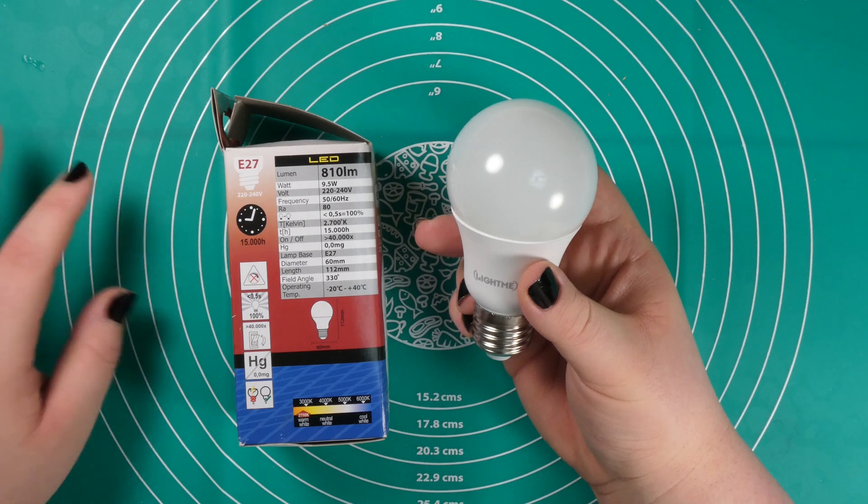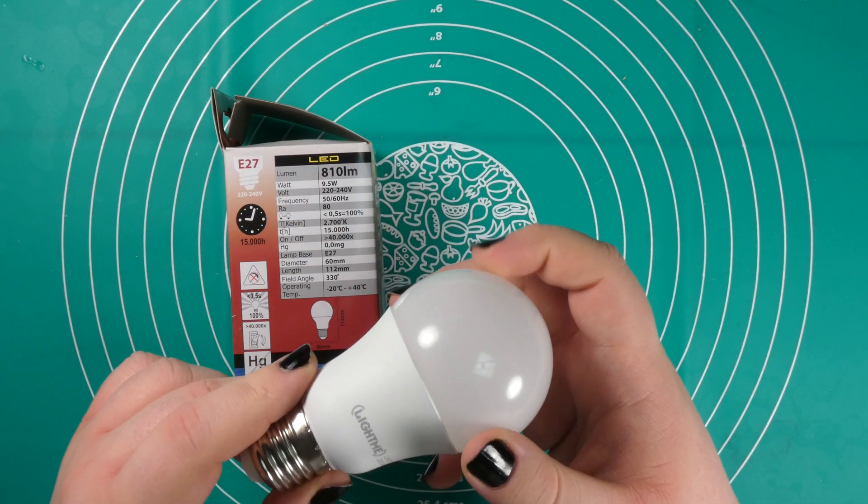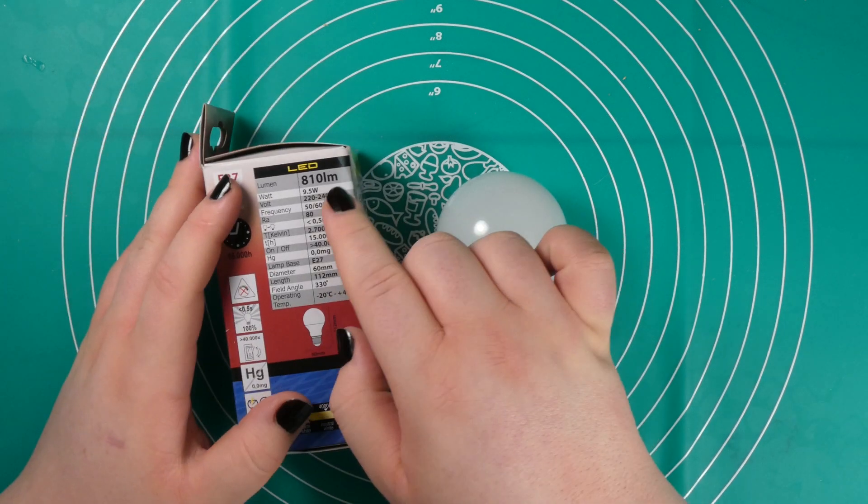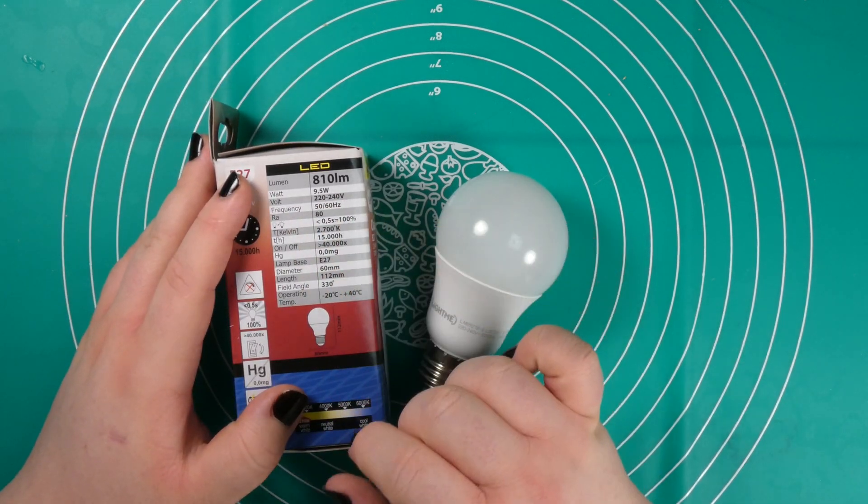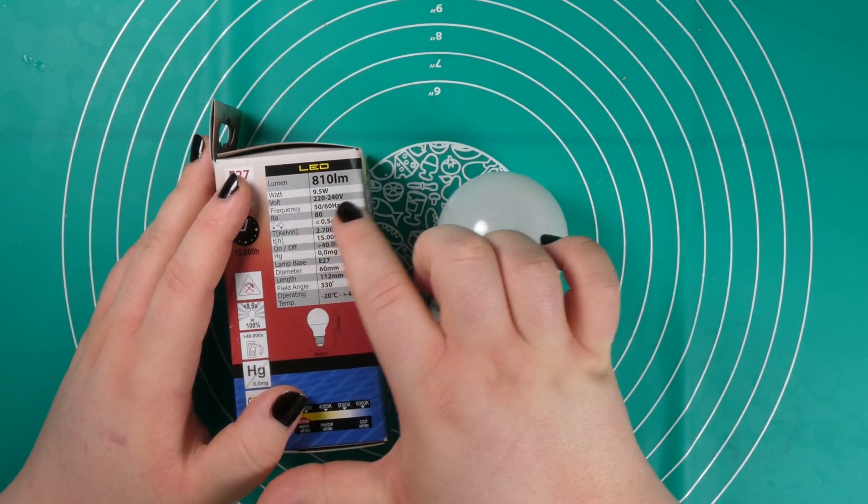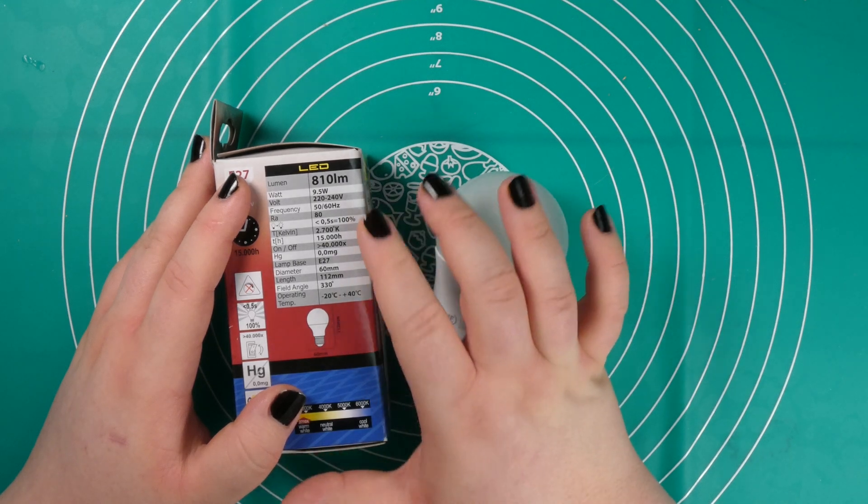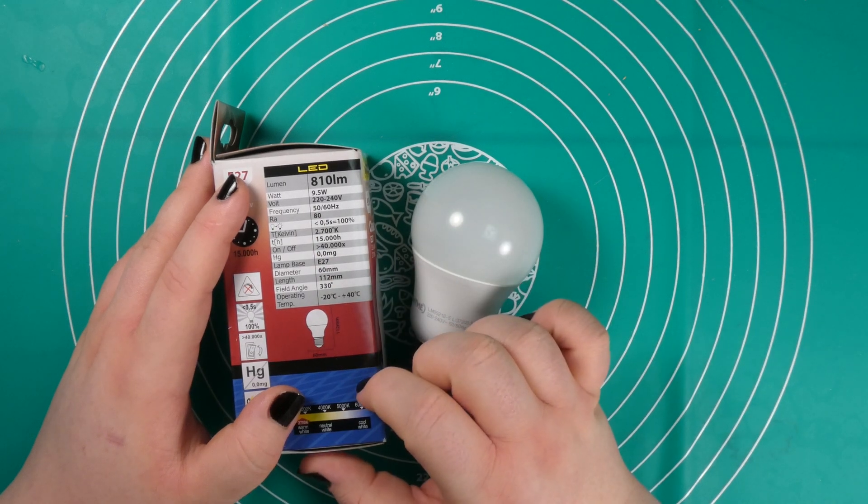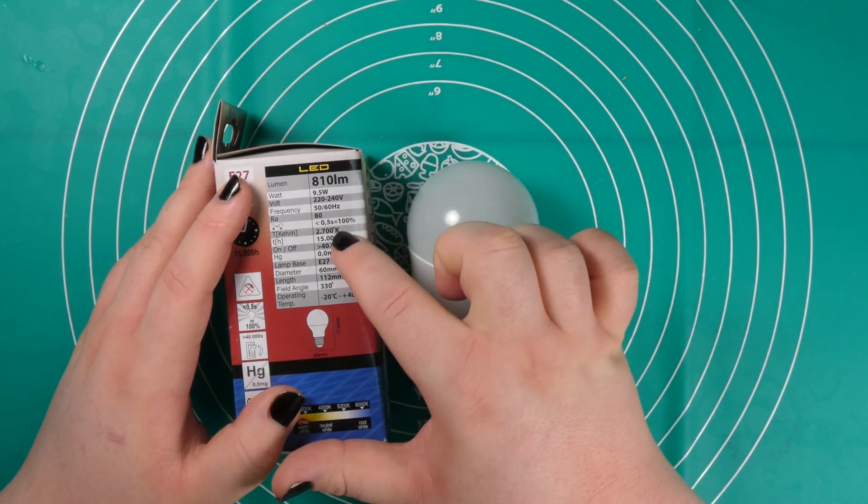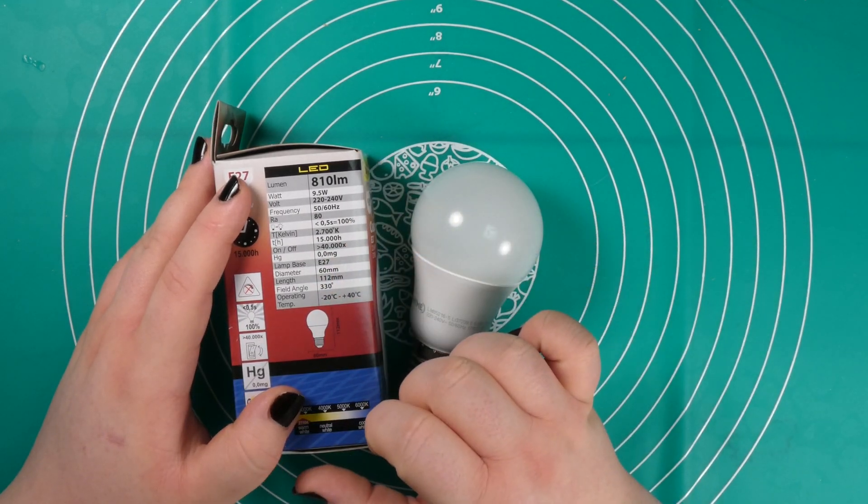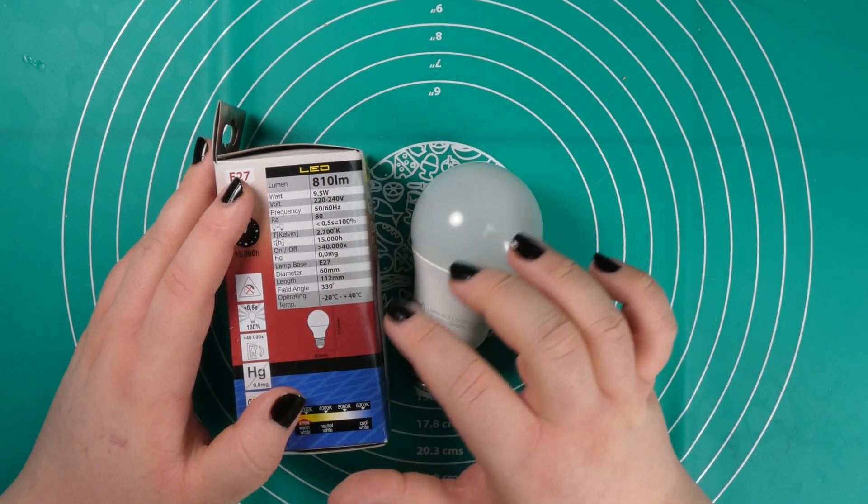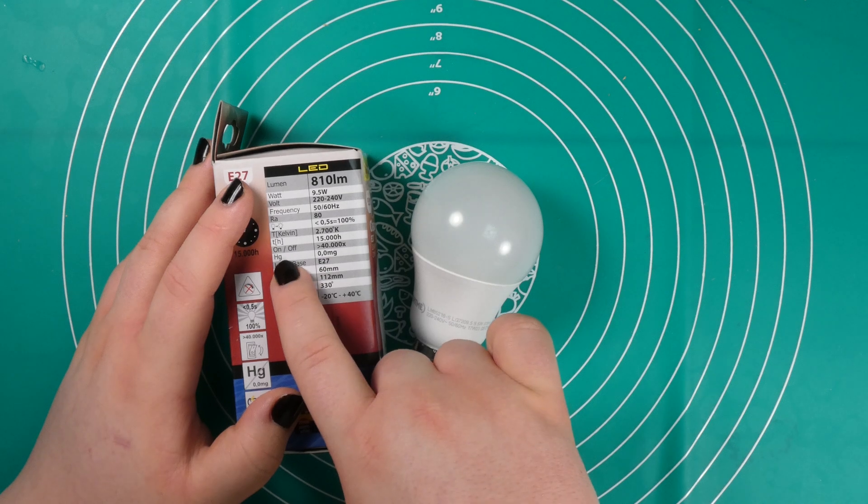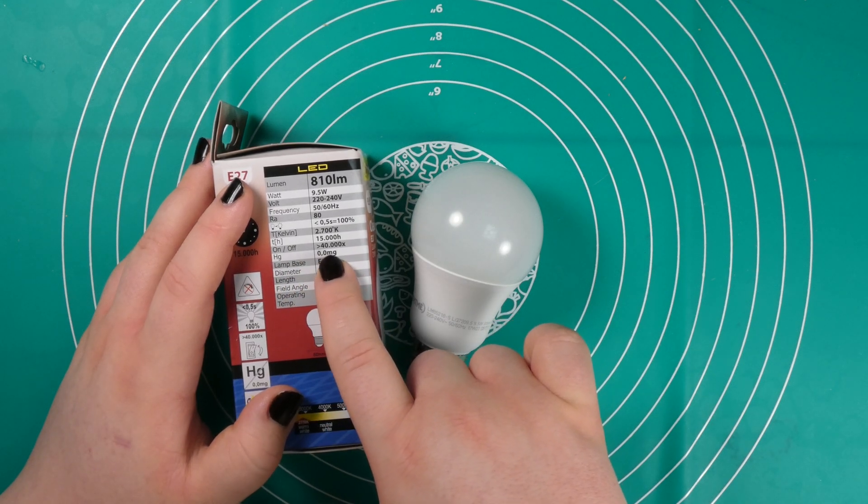But that's beside the video, this is just maybe useful information. So the light over here again, 810 lumen, 9.5 watt, 220 to 240 volt AC, 50-60 Hertz frequency. I don't know what RA means, don't know the other things, 2700 Kelvin light temperature.